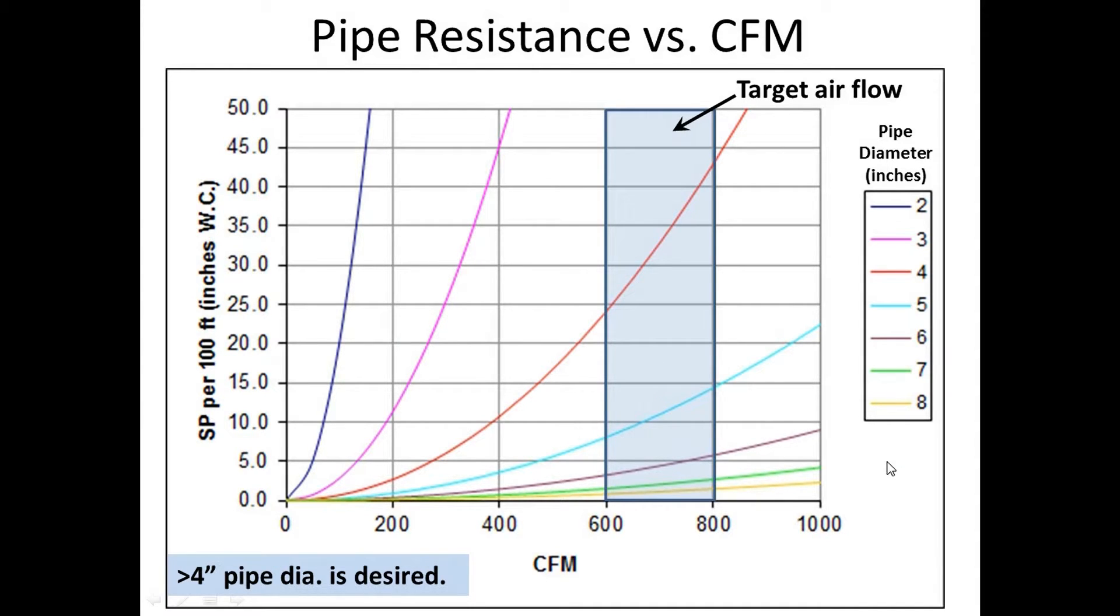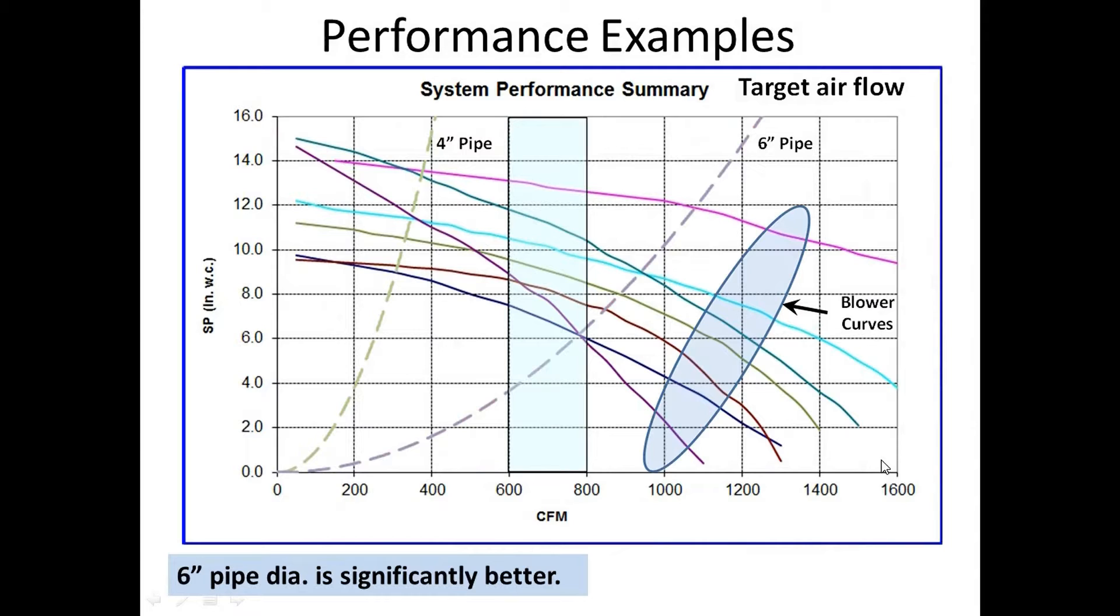Now you want to start talking about system performance. On this, you're combining both the blower curves, which are these lines here from the first graph we had, and the pipe resistance. So in this case I just settled on two pipe resistances: four inches and six inches.